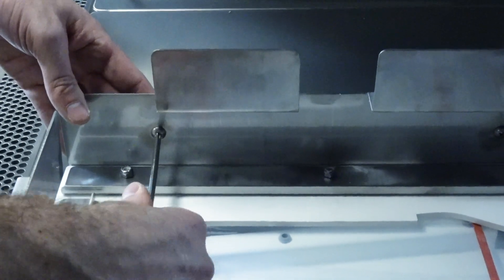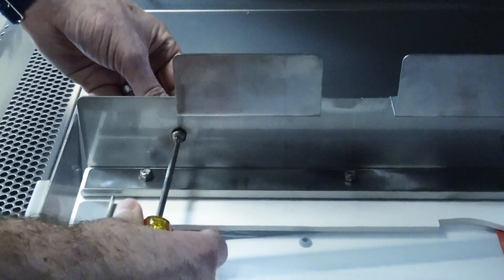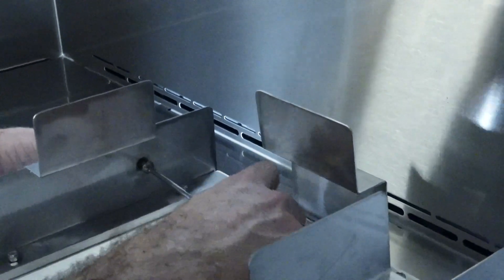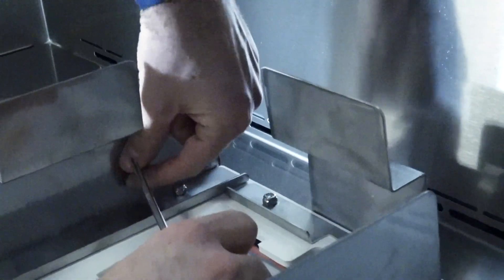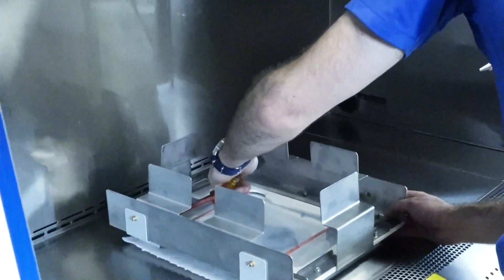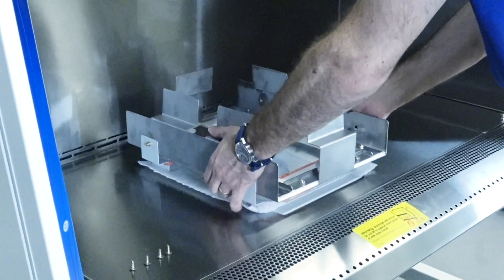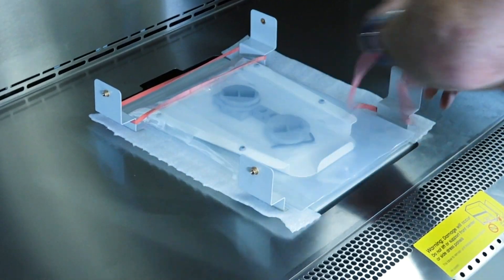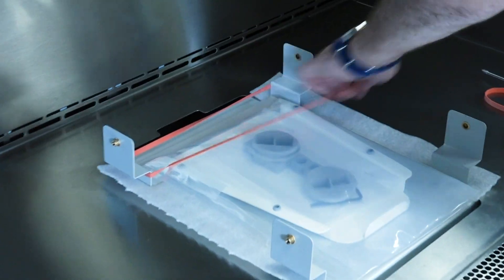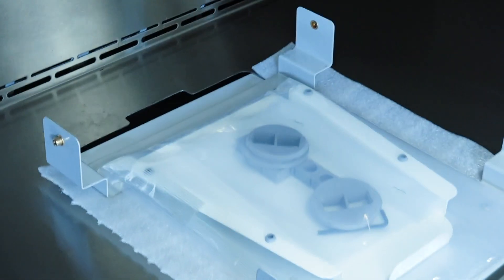Next, remove the four shipping screws from the scope seal assembly. Set aside the plastic bag containing the microscope mount and pass-through components. We'll use them soon.